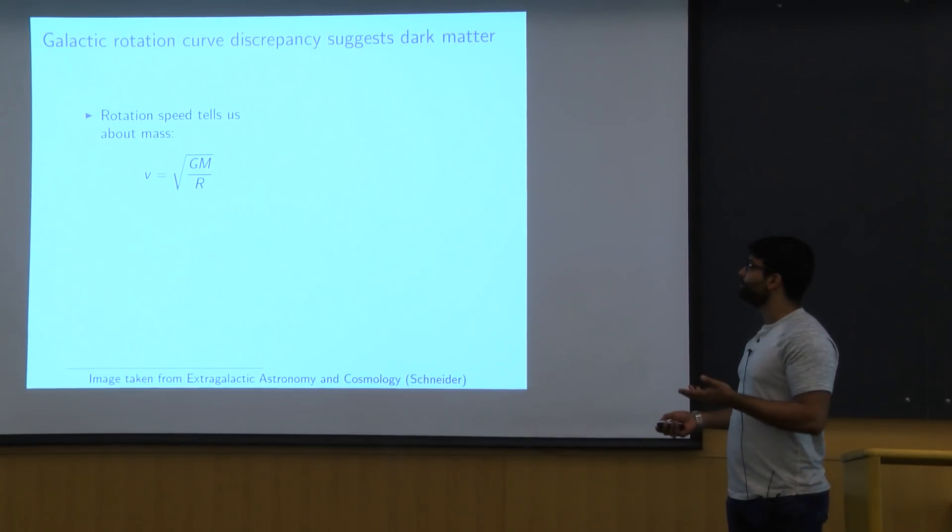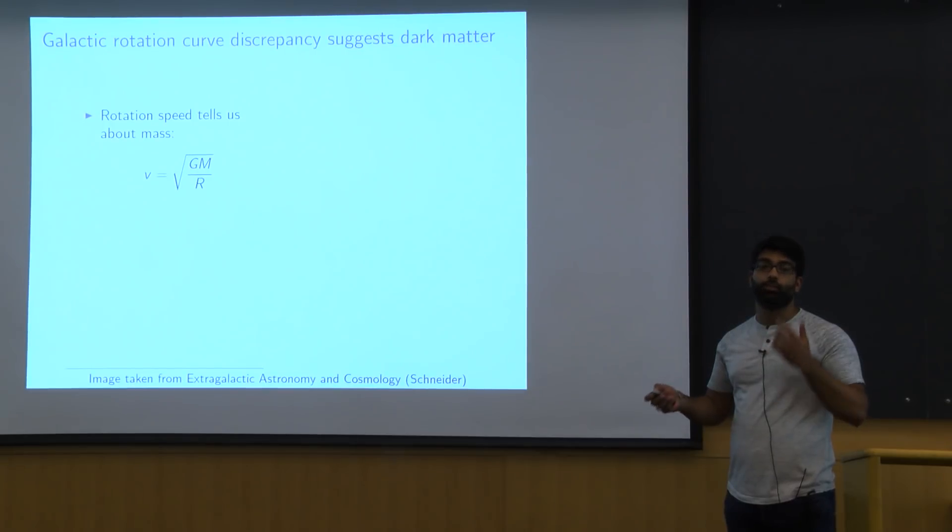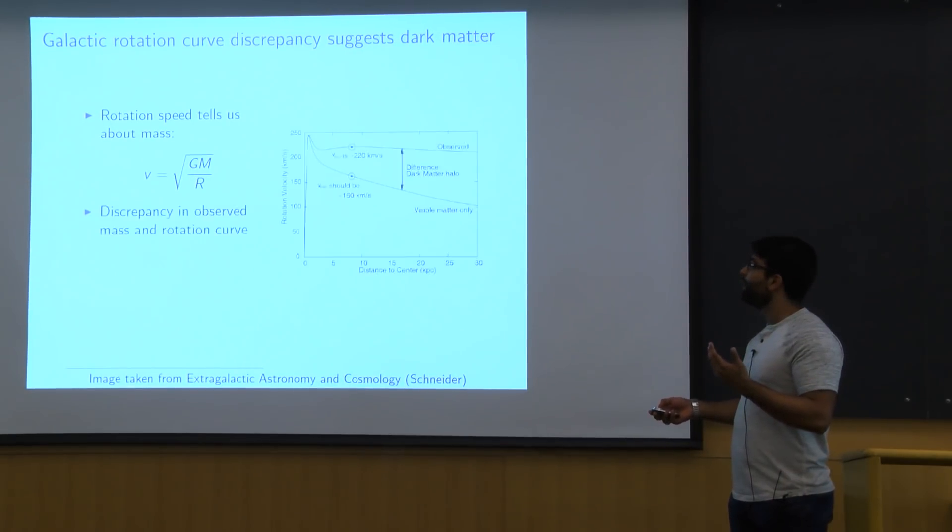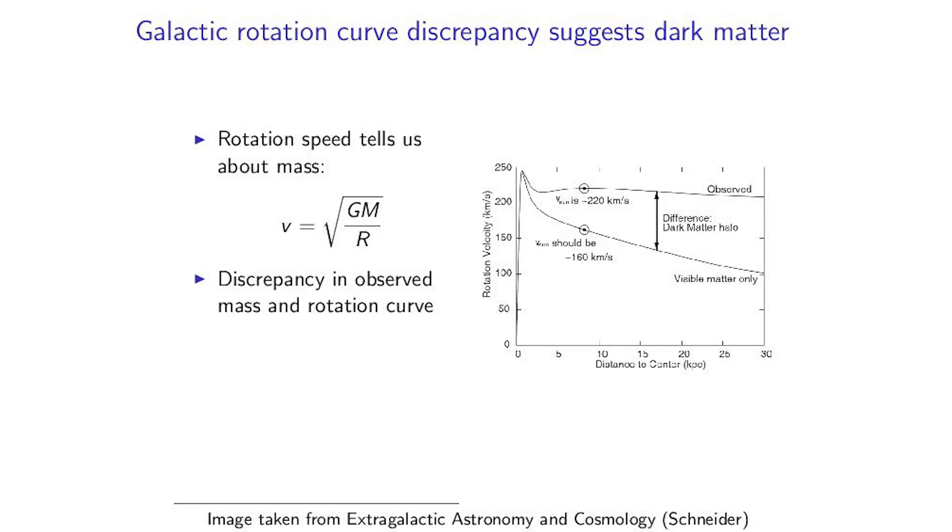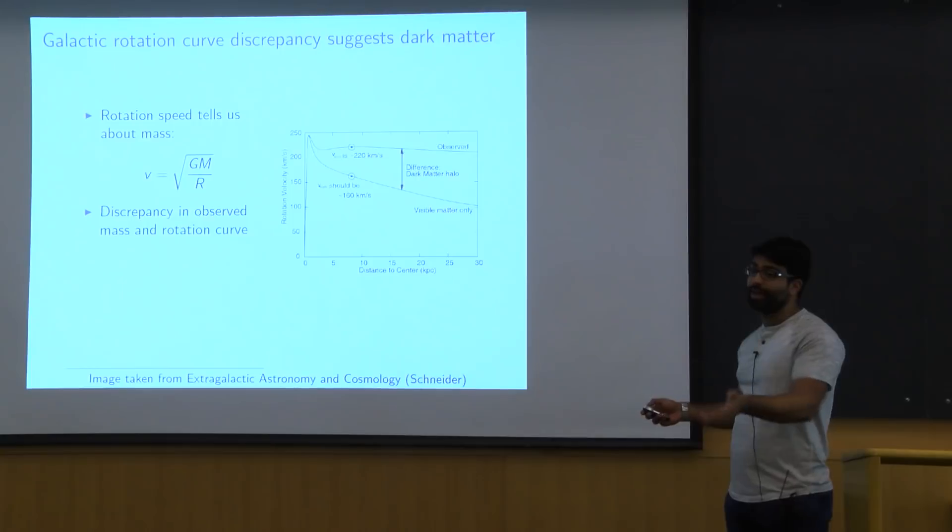So using a formula like this, given the mass distribution that we see in the Milky Way galaxy, we can guess what kinds of velocities we should see various things rotating at. And we can plot that and we get a curve that looks like this. But actually, as we'll see later when we go ahead and observe what velocities stars are really moving at, we'll actually see a huge discrepancy between what we would expect from the visible matter that we can see.